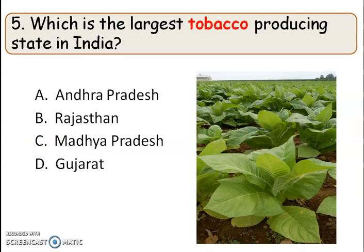The next question: which is the largest tobacco producing state in India? The right answer is option A, Andhra Pradesh. Tobacco is a rabi crop and Andhra Pradesh holds first position, with Gujarat in second position.